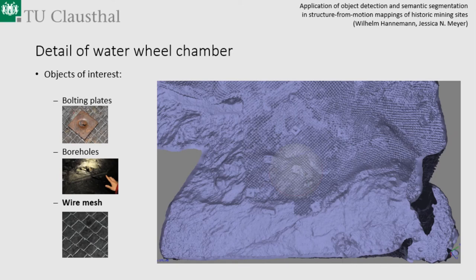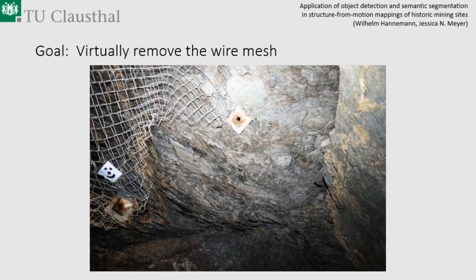The next part of my talk is about semantic segmentation — pixel-wise labeling. The inspiration came from our archaeologist, who said this is a nice face wall in the chamber but the wire meshes obstruct the surface — could we just remove them somehow? Here you see an image with the stone of the face wall, bolting plates, a photogrammetric target, and these wire meshes. If you remove the wires from the image, you can probably see more of the surface.